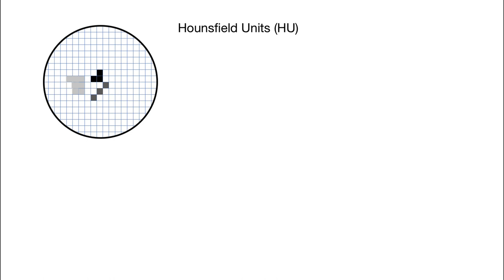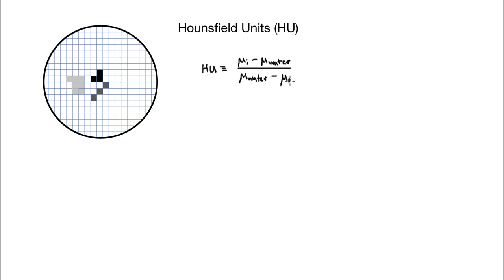The Hounsfield unit is named after Sir Godfrey Hounsfield, who was one of the pioneers in CT. It is defined as follows: it's mu-i (the linear attenuation coefficient in the pixel) minus the mu of water, divided by the mu of water minus the mu of air, and you take that whole quantity times a thousand to give it reasonable units.